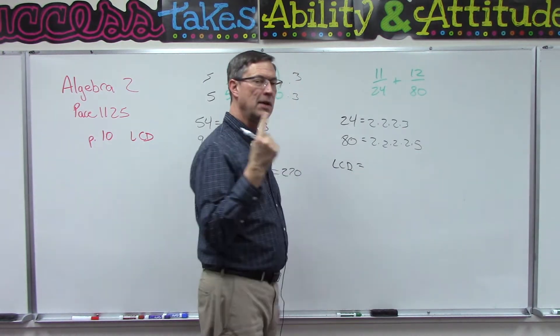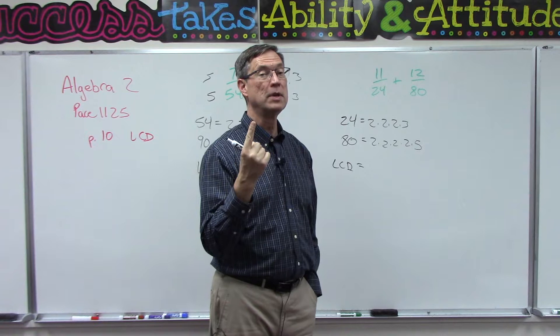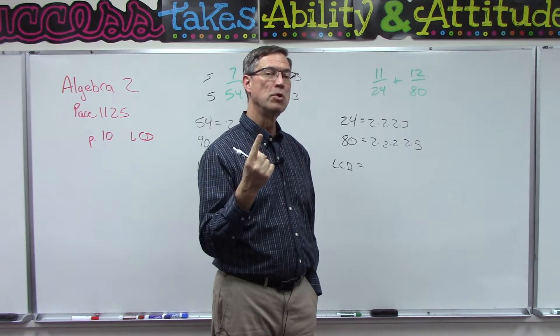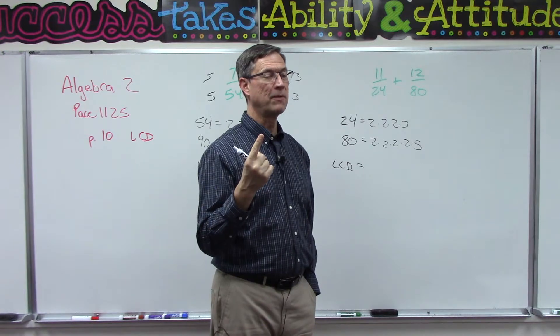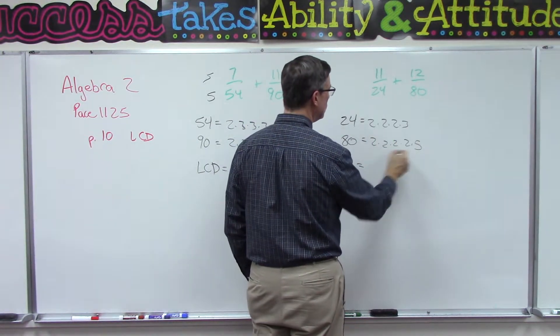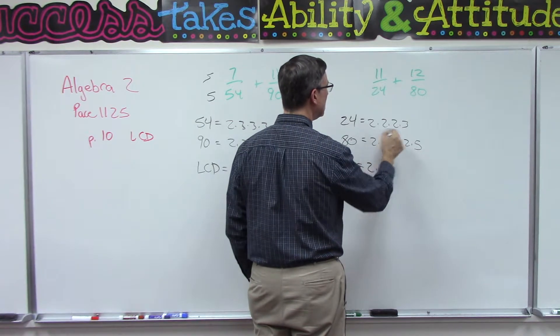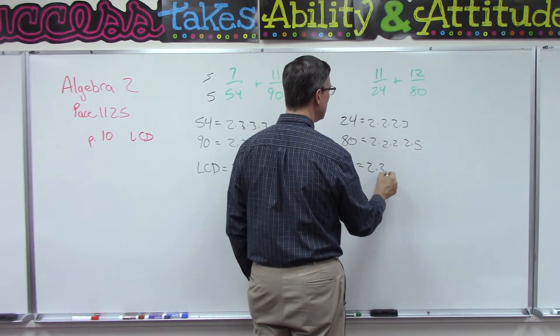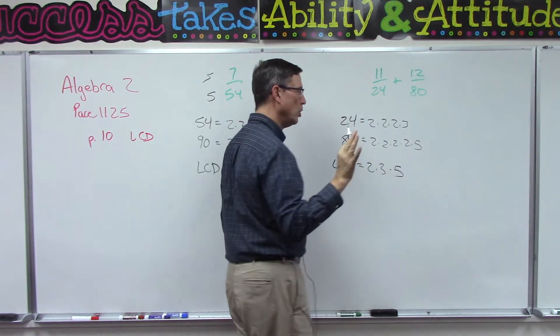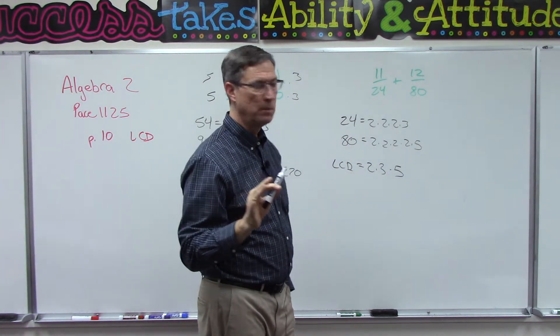Anyways, we have the right factors. Now LCD, the rules are we take every number that's used as a factor in either of the numbers, then we're going to use the most number of times that that factor is used in either one of them. I see 2 is being used, 3 is being used, and 5 is being used.